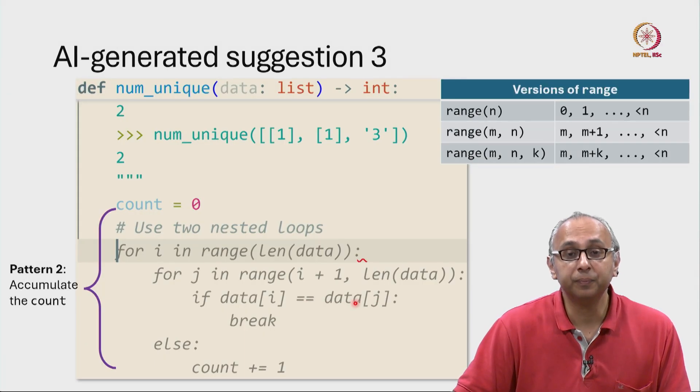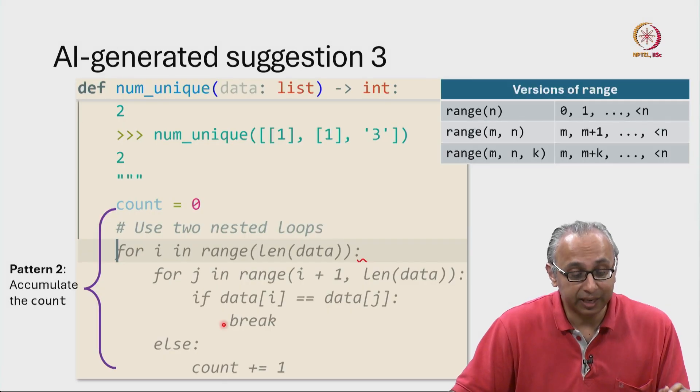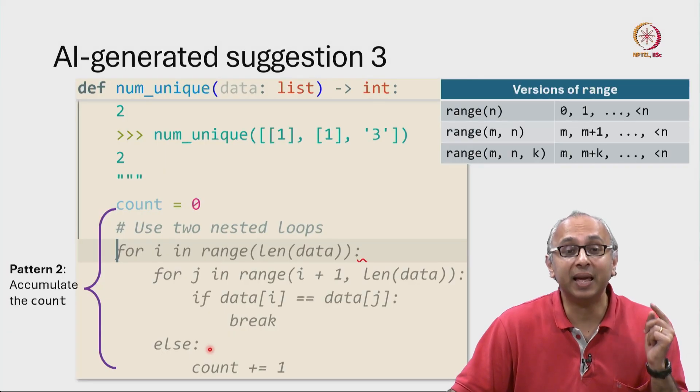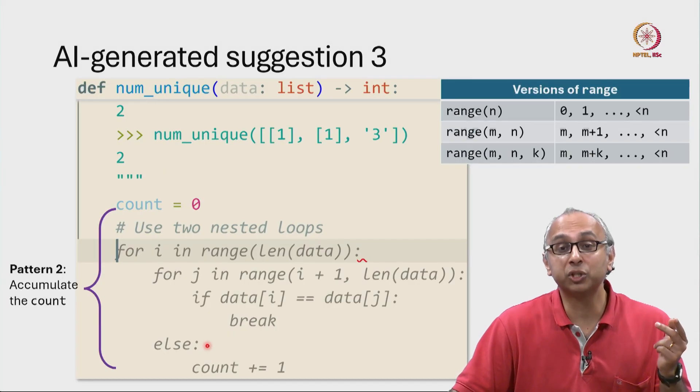If they are equal, we are breaking out of the loop. And we know that if we break out of the loop, we will not come to the else case. Remember the else case of a for loop corresponds to the no break situation.